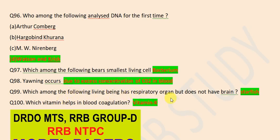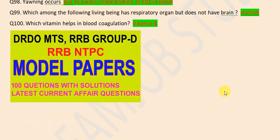Which among the following living beings has respiratory organs but does not have a brain? Starfish. Which vitamin helps in blood coagulation? Vitamin K.